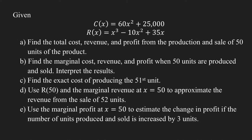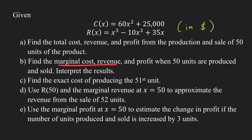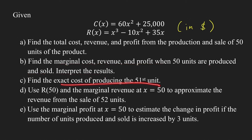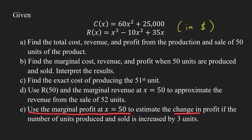Now let's solve a problem. Suppose we have a cost function c(x) and revenue function r(x) for a company that sells a certain product, both in dollars. We'll find: (a) the total cost, total revenue, and total profit from producing and selling 50 units; (b) the marginal cost, marginal revenue, and marginal profit at x=50 with interpretation; (c) the exact cost of producing the 51st unit; (d) use r(50) and marginal revenue at 50 to approximate revenue from 52 units; and (e) use marginal profit at x=50 to estimate the change in profit if units increase by 3.